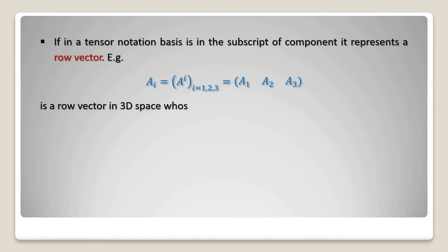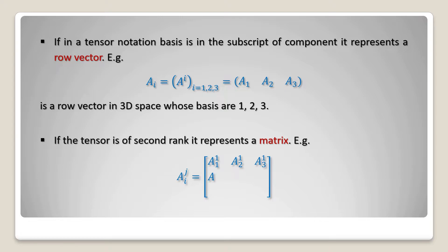The above tensors are of rank 1 as both tensors have one index per component. If the tensor is of second rank, it represents a metric.